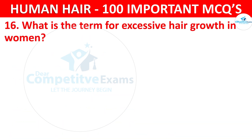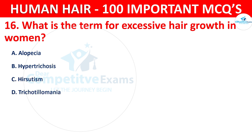Question number 16. What is the term for excessive hair growth in women? The options are alopecia, hypertrichosis, hirsutism, or trichotillomania.